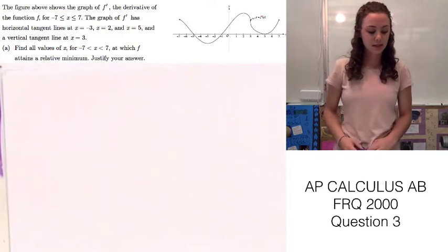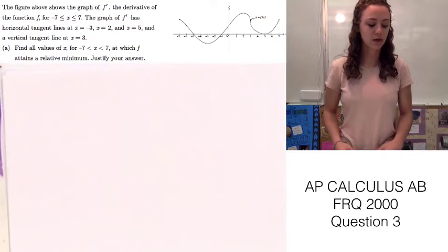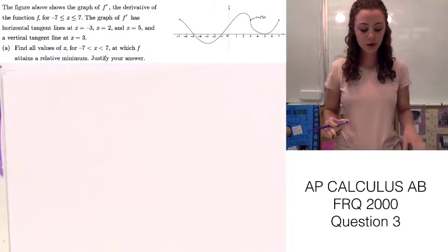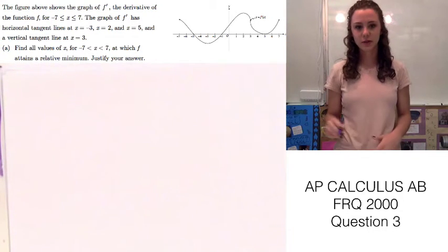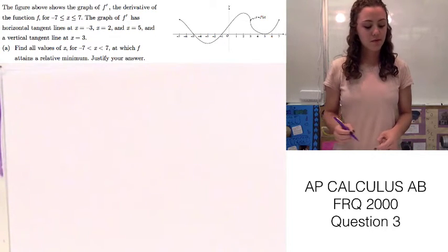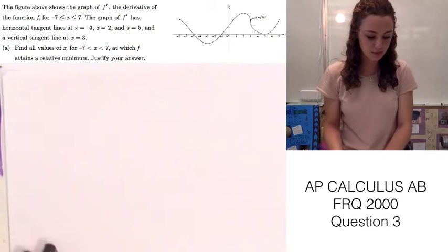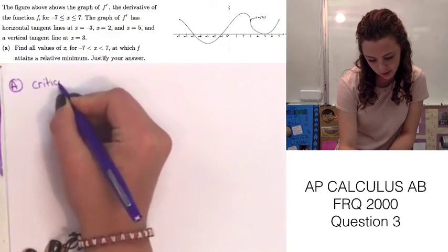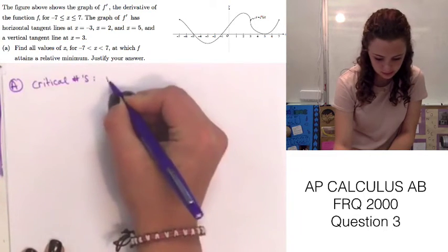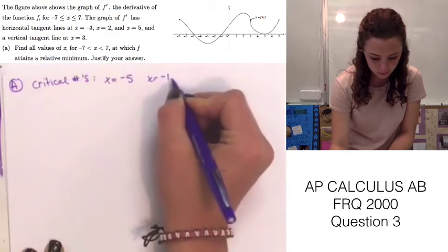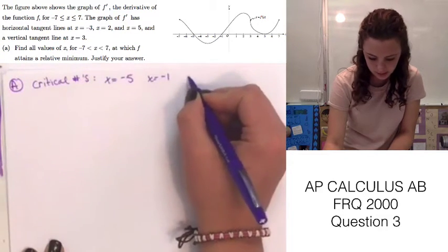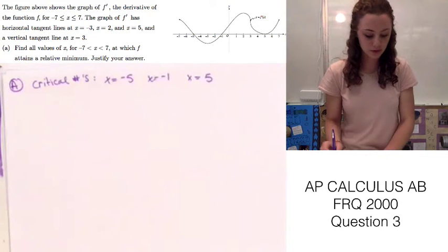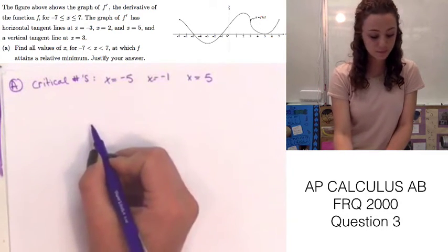Part A asks us to find all values of x between negative 7 and 7 at which f attains a relative minimum, and we need to justify our answer. By looking at the graph, we can find the critical numbers, because the critical numbers are when f prime of x equals 0, or where it intersects the x-axis. We can visibly see that the critical numbers are at x equals negative 5, x equals negative 1, and x equals 5. Since it's just relative, we don't need to use endpoints.